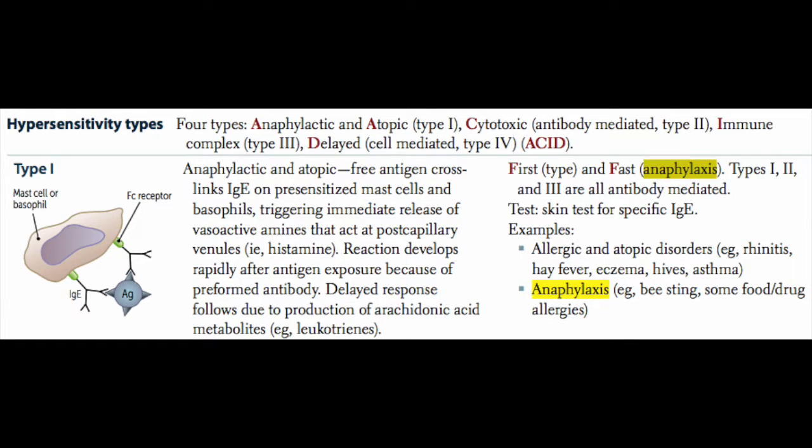Type 1 hypersensitivity reactions are defined by an antigen in the environment — usually what we call an allergen — that cross-links to an IgE antibody, and the IgE antibody is already bound to mast cells and basophils in your body.